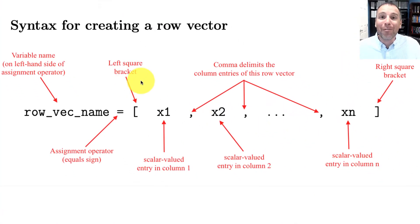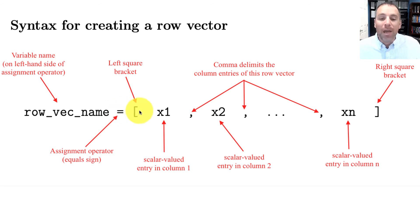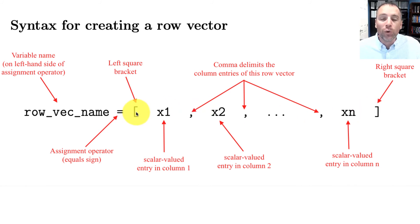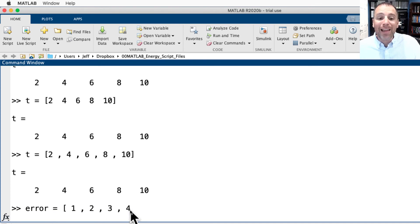To end this video, let's do a recap of the syntax we use to define row vectors. On the left-hand side of our definition, we write a variable name — I recommend using lowercase letters for vectors. Then we use the assignment operator or equal sign. The moment we start defining our vector, we use the left square bracket, which says please define a matrix for me. Every left square bracket must be matched by a right square bracket. If you do not close the right square bracket, MATLAB will assume you want to continue typing. Let's test this: if I type 'error' equals 1, 2, 3, 4 without closing the bracket, MATLAB waits. The moment I close it out, MATLAB recognizes the statement is complete.